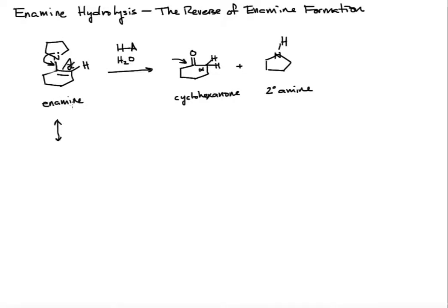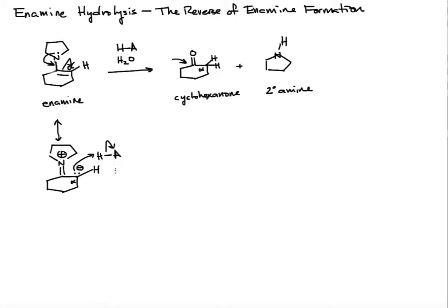These electrons then go on the alpha carbon. In this resonance hybrid, the nitrogen will now bear a positive charge, and this alpha carbon now has a lone pair and a negative charge — so the charges are balanced. This is important because in our product the alpha carbon has two hydrogens, and we're showing a carbanion here. A carbanion is a nucleophile or a base, and that base can then react with an acid, HA.